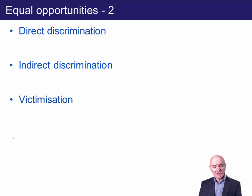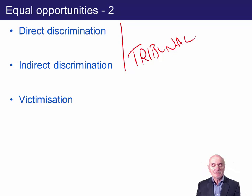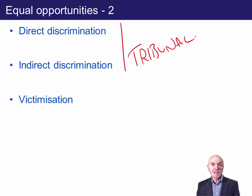Victimisation is where someone has taken you to an employment tribunal. An employee has alleged discrimination — perhaps that they weren't promoted when they should have been — and the tribunal finds for the employee. They come back to work and, because they've taken you to court and won, you get your own back on them by being nasty to them. That is victimisation, and it's also a crime.